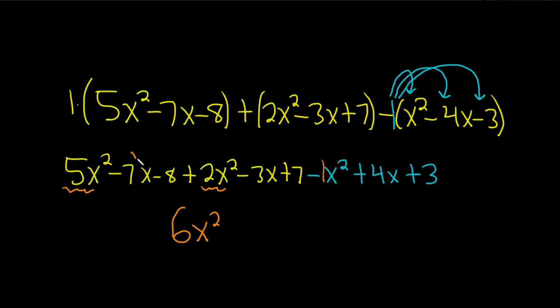What about the x's? We have negative 7x minus 3x which gives us negative 10x, but then we add that to 4x. That's negative 6x.